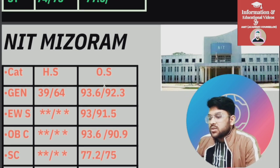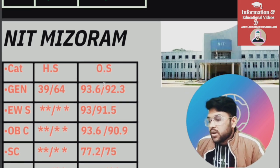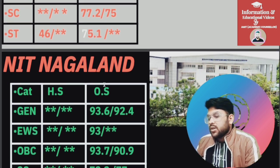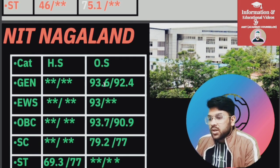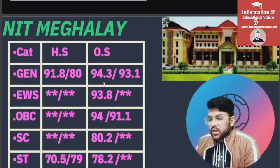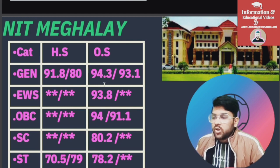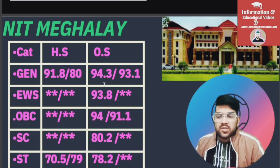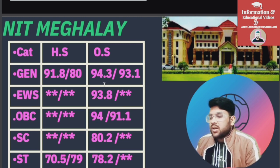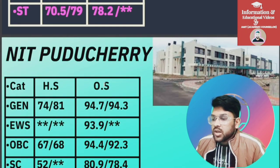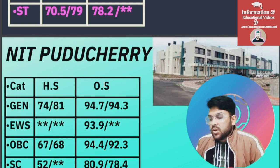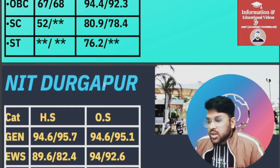Continuing NIT Arunachal: SC 79.3, ST 77.2. For female and home state data, check after the slash in the H.S. column. For NIT Puducherry: General 94.7, EWS 93.9, OBC 94.4, SC 80.9, ST 76.2.